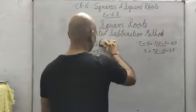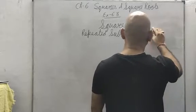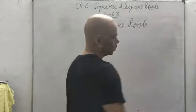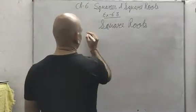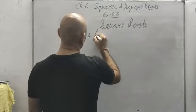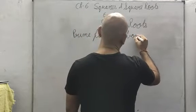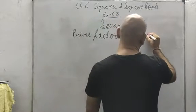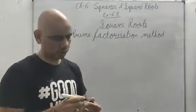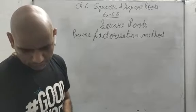Now the popular method: another popular method is the prime factorization method. This is the popular method to find out the square root. You will apply prime factorization method in exercise 6.3, and in 6.4 we will learn one more method. But right now let me solve a question with prime factorization method.